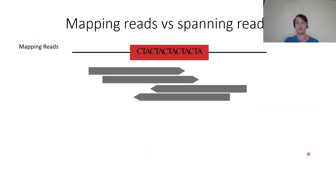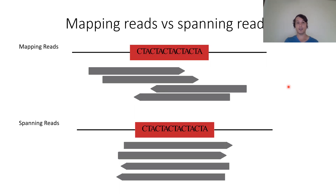An important distinction in HipSTR output: mapping reads have part of the read mapping to unique sequence and part to the STR — useful as supporting evidence but less reliable for a full genotype call. Spanning reads are more useful: they map to unique flanking sequence, span the entirety of the repeat, and still have unique flanking sequence on the other side, giving much more confidence in the precise repeat length.